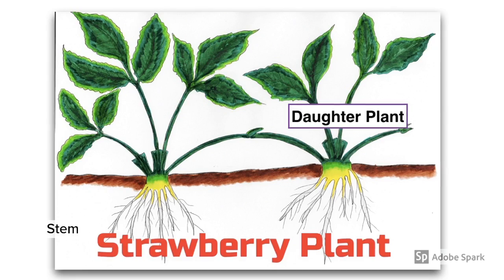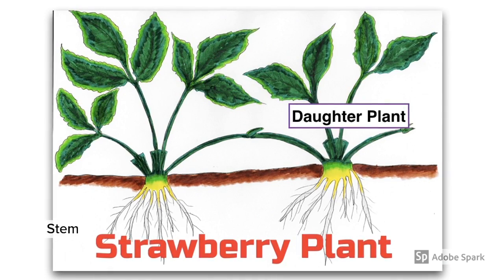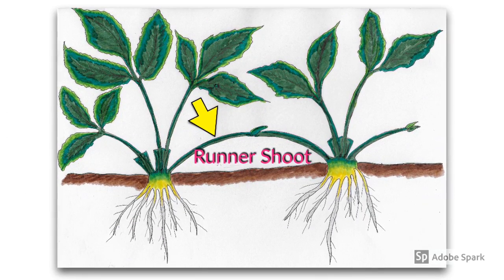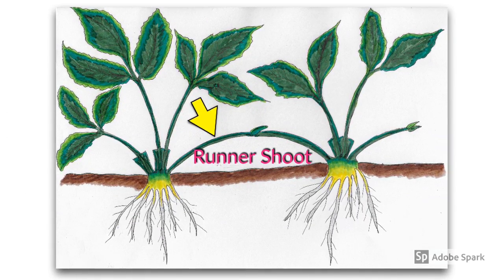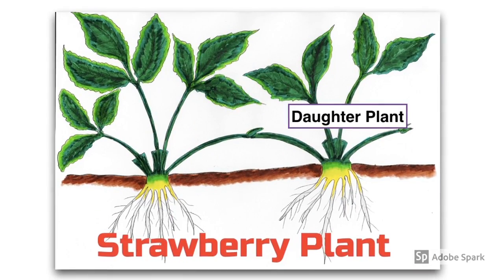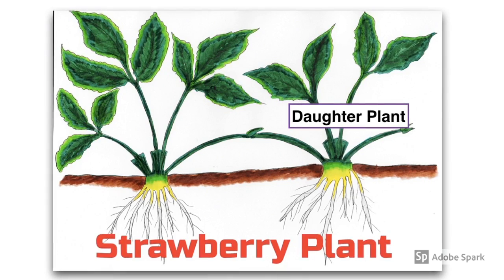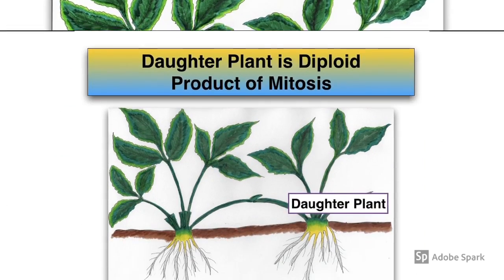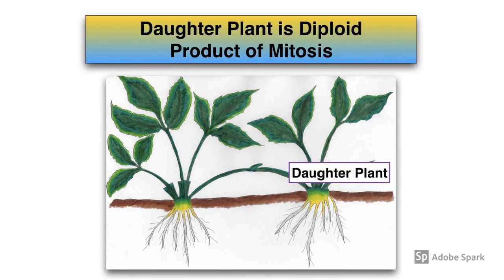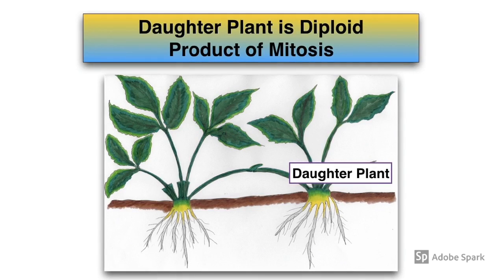The first example of natural vegetative propagation using the stem is the strawberry plant. The strawberry plant can develop runner shoots that branch from the main parent stem, grow along the ground, and eventually give rise to new daughter plants. As the daughter plant is produced by mitosis, it is genetically identical to the parent plant and is also diploid.